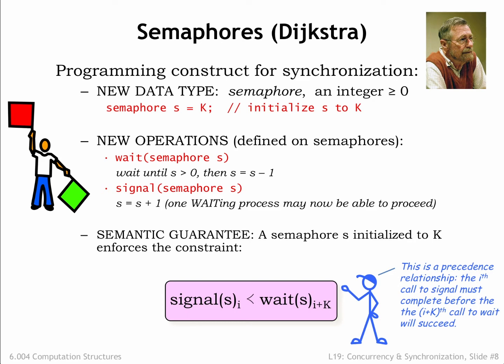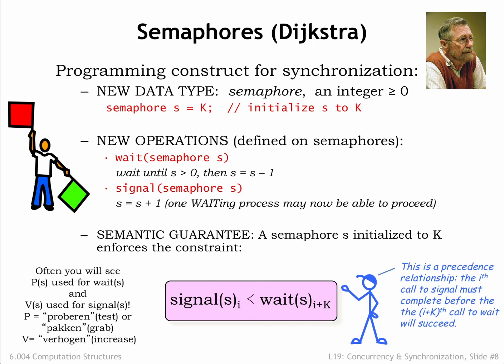Note that in 6.004 we're ruling out semaphores with negative values. In the literature you may see P used in place of wait and V used in place of signal. These operation names are derived from the Dutch words for test and increase. Let's see how to use semaphores to implement precedence constraints.